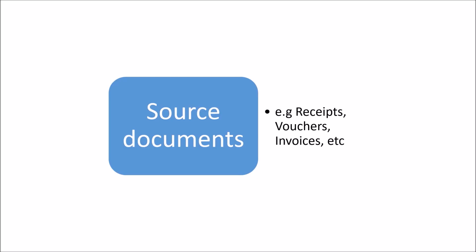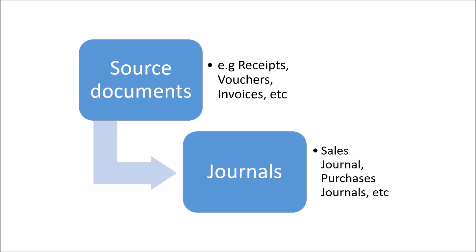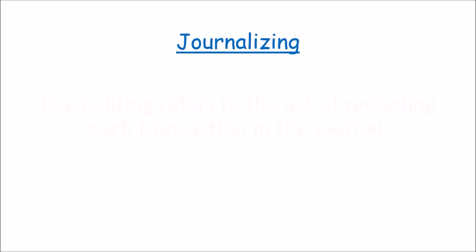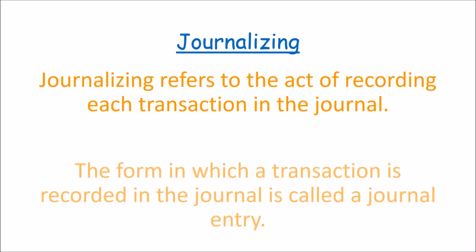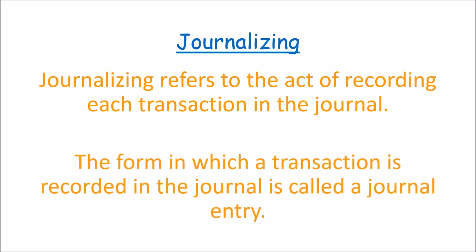The information in source documents now becomes the basis for journal entries. The term here is called journalizing, and by definition, journalizing refers to the act of recording each transaction in the journal. The form in which it is recorded is known as a journal entry. The journal is also known as the book of original entry, the book of prime entry, or a subsidiary book.